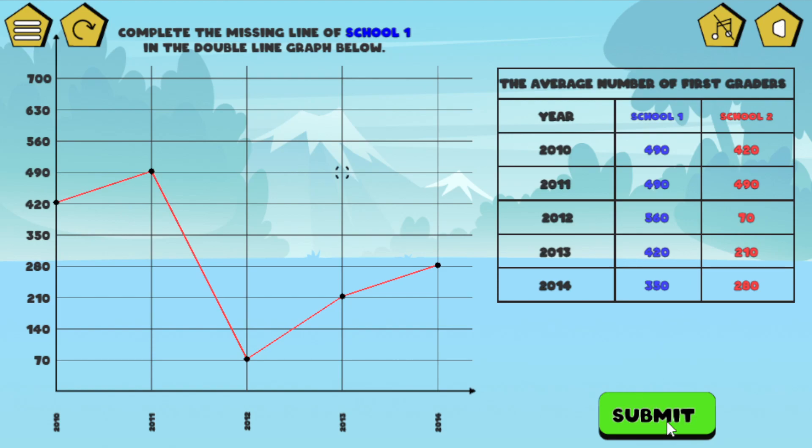The submit button is what you will click after you draw the proper line graph. And I'll go ahead and create one. Really, it's pretty simple to play. All you're going to do is, in this case, it says complete the missing line of school one. So you've got school one down here. So you'll want to plot these points going from left to right. Well, 2010 is over here.